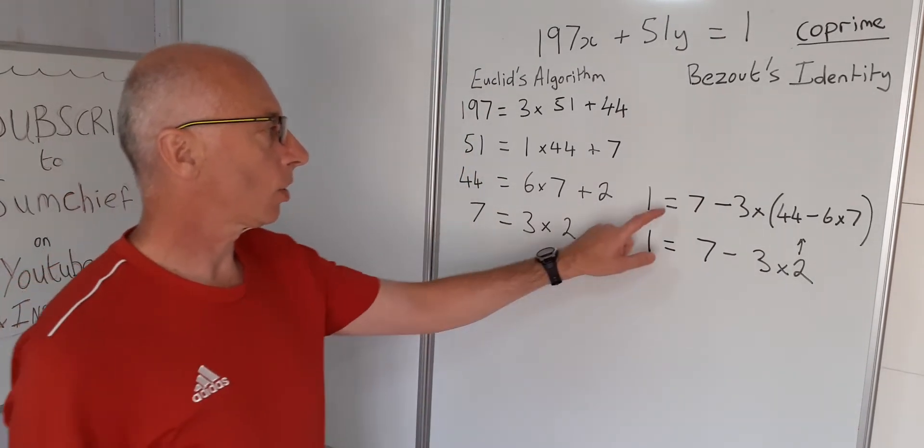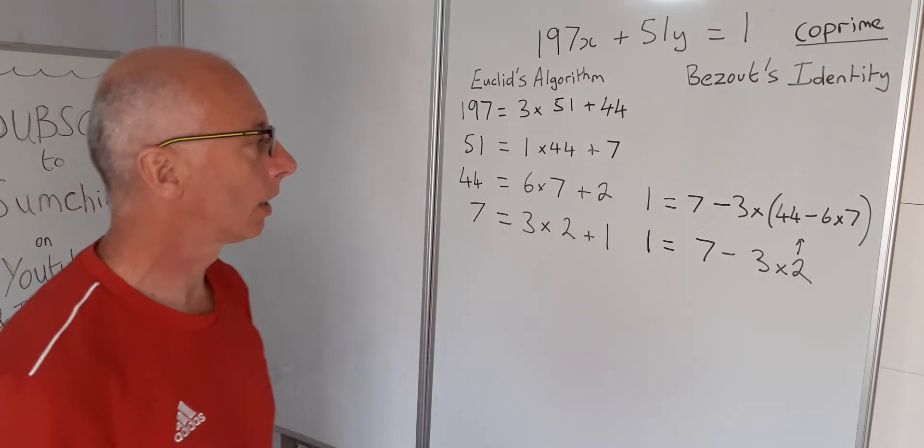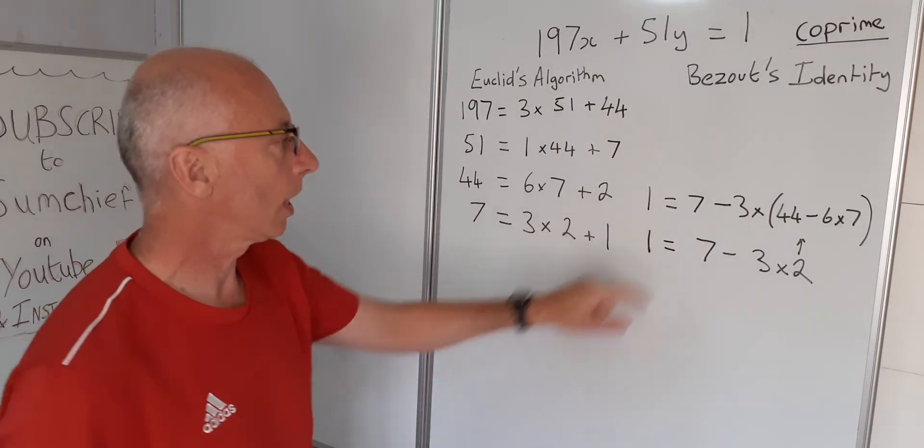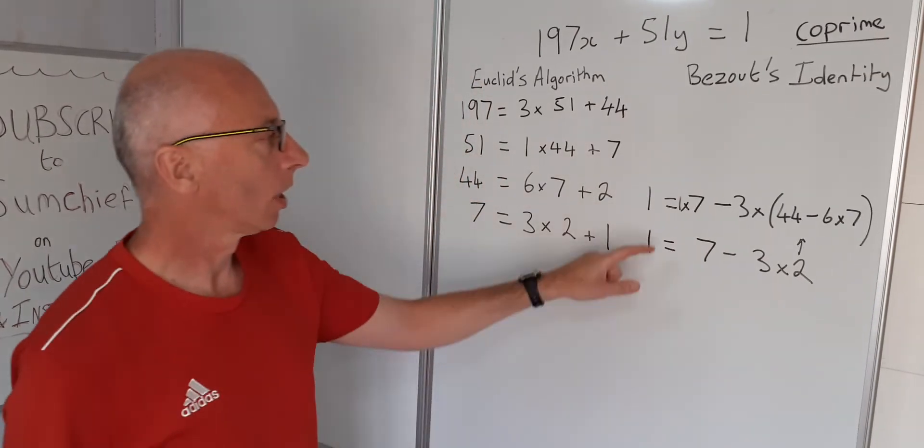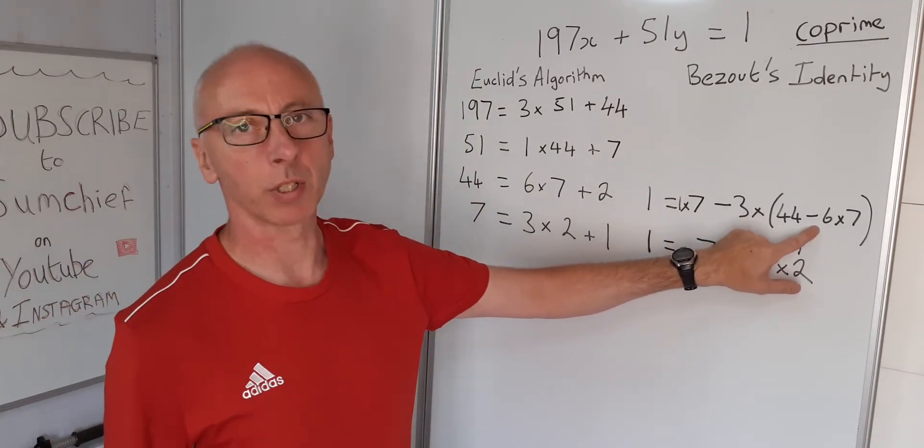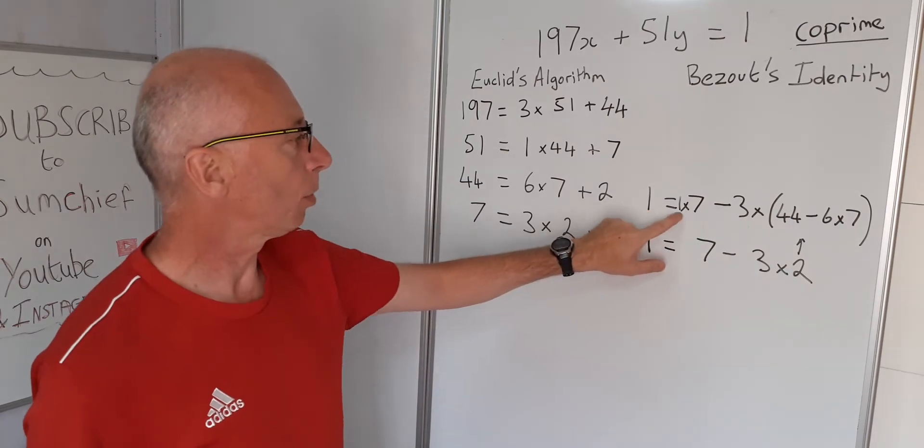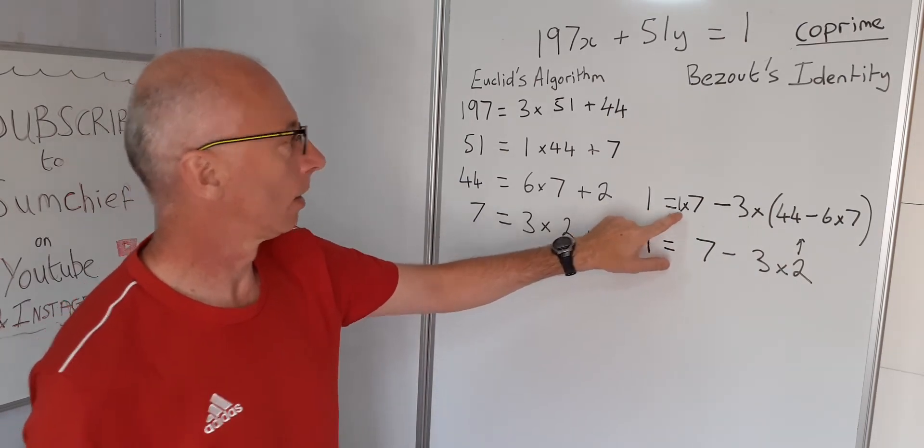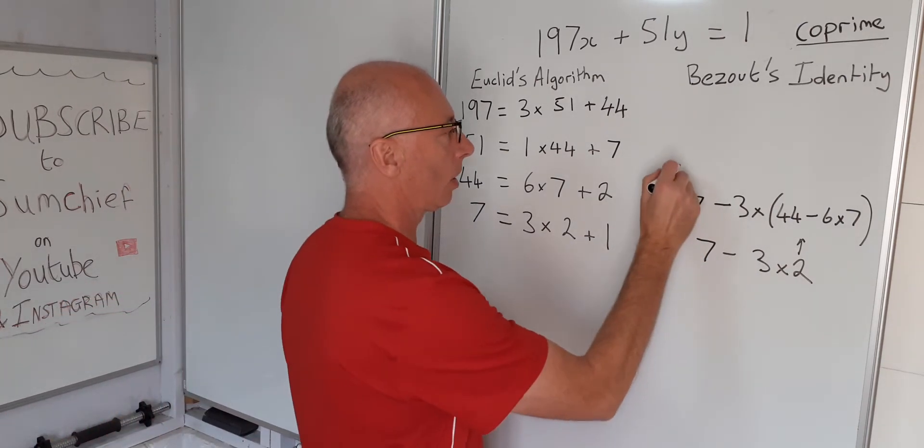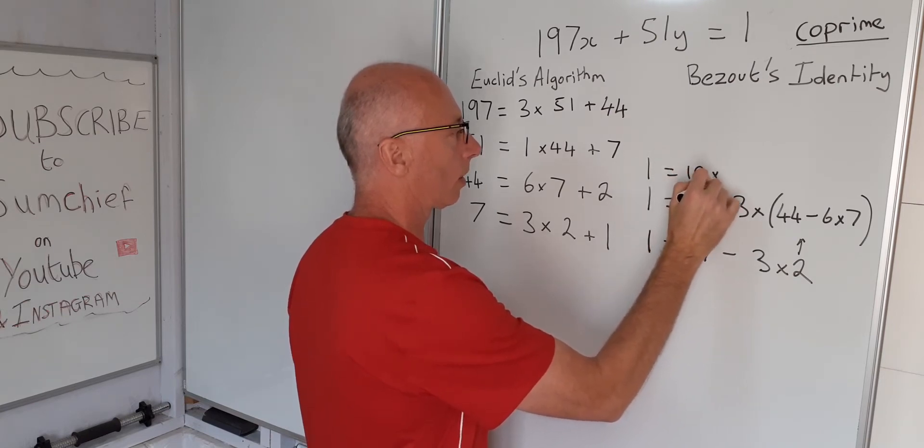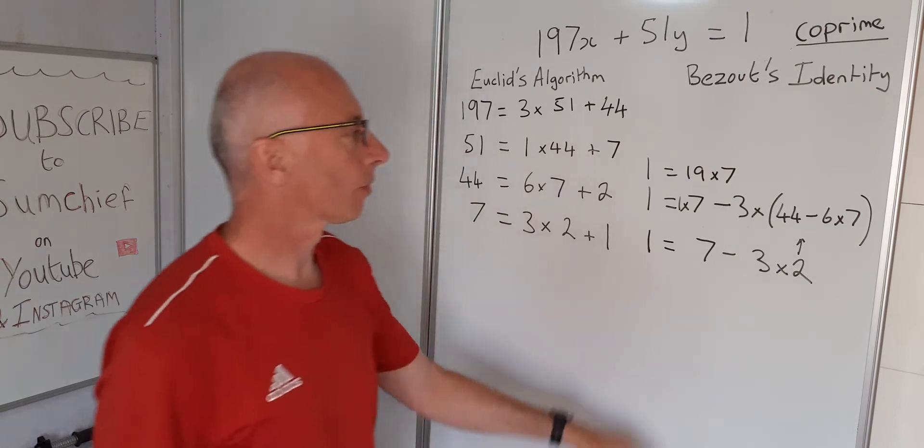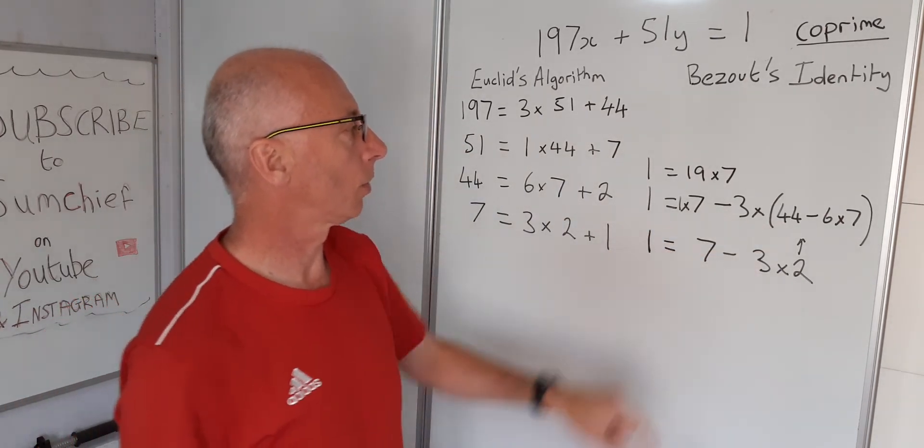So now we're just going to simplify that up a little bit. So we've got one 7 here, we could just put 1 times 7 there if we wish. And then we've got a minus 3 times minus 6 which is 18. So that plus 1 there that's going to give us 19. So now we've got 1 equals 19 times 7 minus 3 times 44.